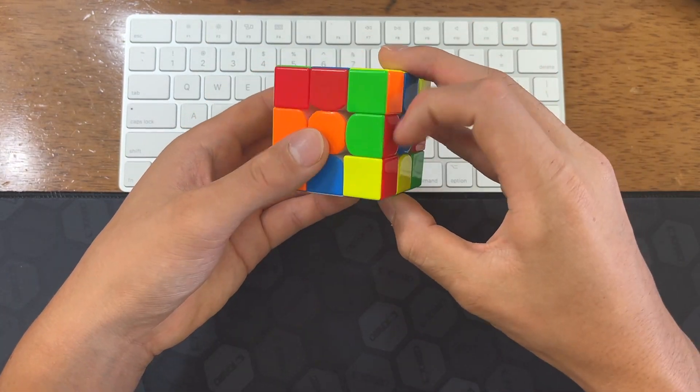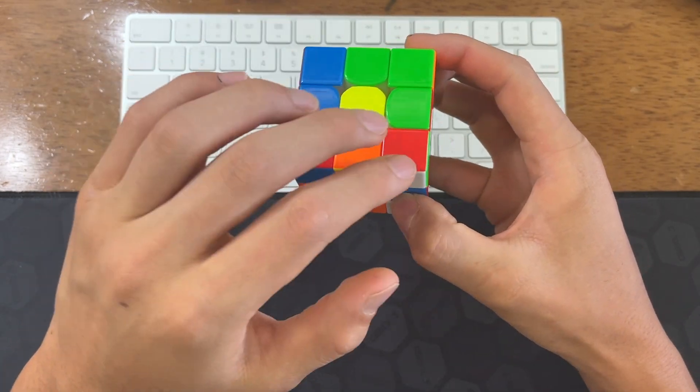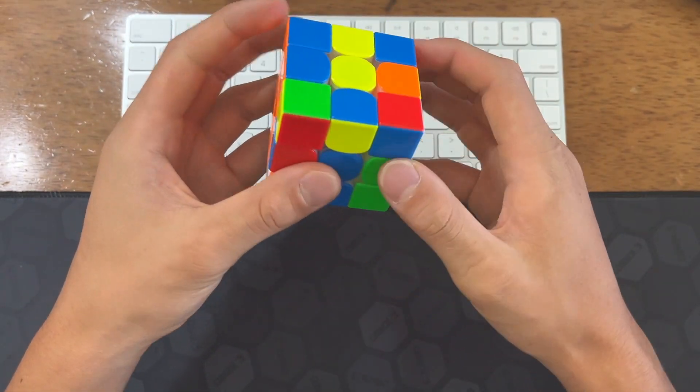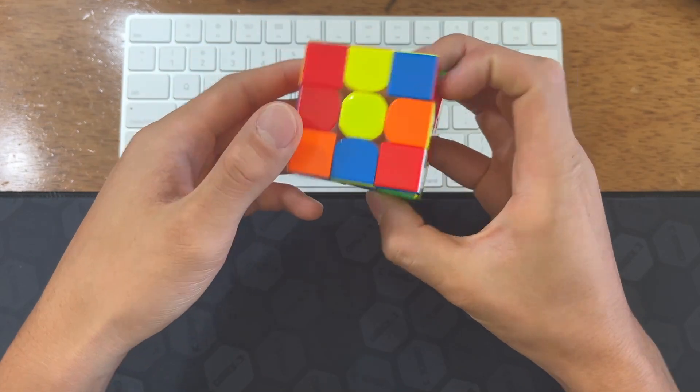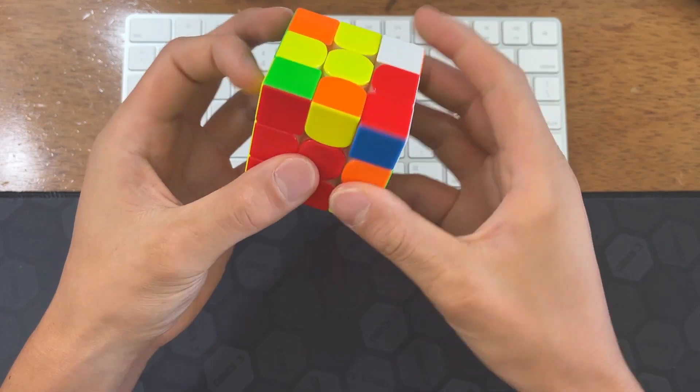And then do a D and you insert this cross edge and then cancel into putting this corner into the top layer. You can just pair that up easily. I saw this pair, so I'll solve it into the back. And you just have these two and then these two. Easy OLL, U perm.